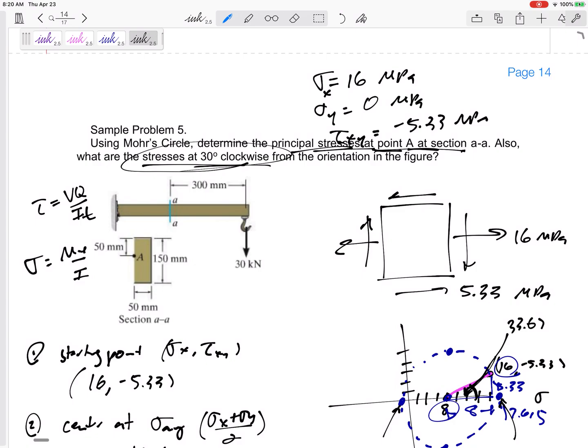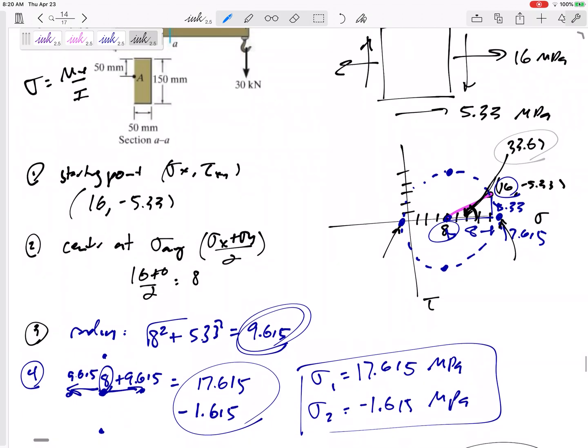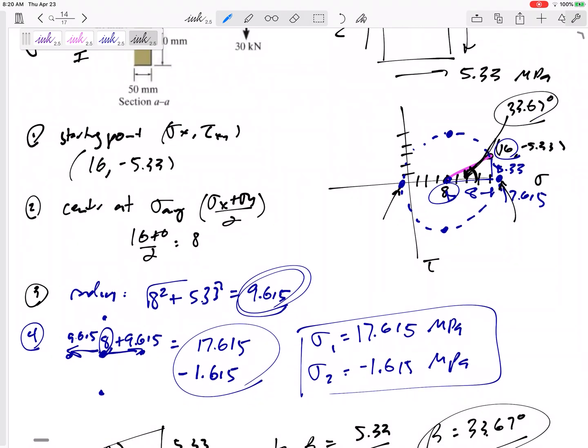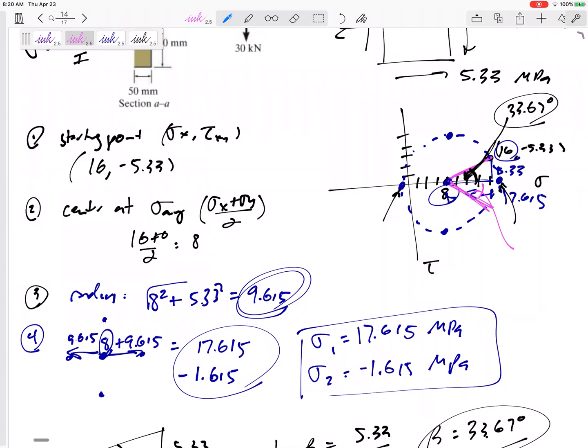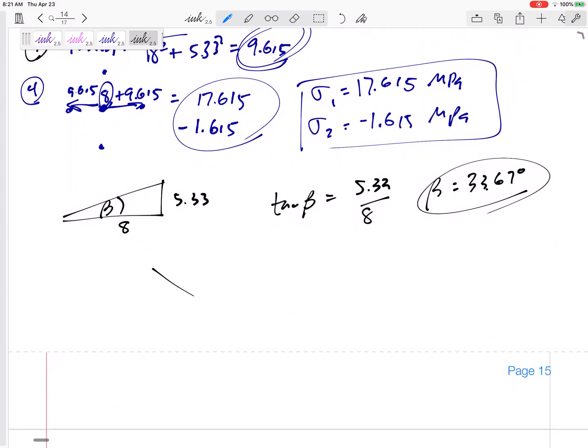So if this is a 5.33 by 8 angle, let me call this beta, tangent 5.33 over 8. I've got a beta of 33.67 degrees. So theta P would be half of that. But why do I need this? I need to know that that angle right inside there, 33.67, because I want to know the stress is 30 degrees clockwise. So I need to rotate on Mohr's circle how much? 60 degrees clockwise. Remember, 1 degree in real life equals 2 degrees on Mohr's circle.